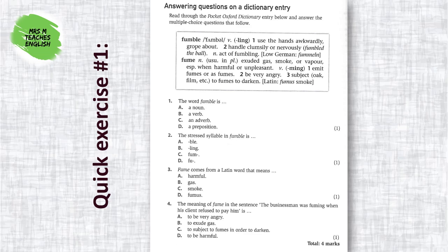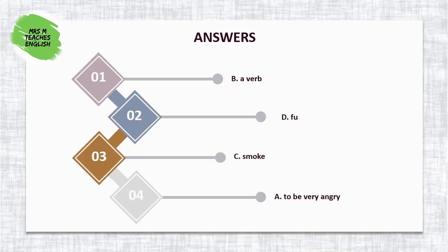Write down just the number and the letter. How did you do? Fumble, question one, is b — a verb. Question two: it's the first syllable that is stressed — fumble. Question three: fume comes from the Latin word that means c — smoke. And question four: if the businessman is fuming, he is said to be a — very angry.